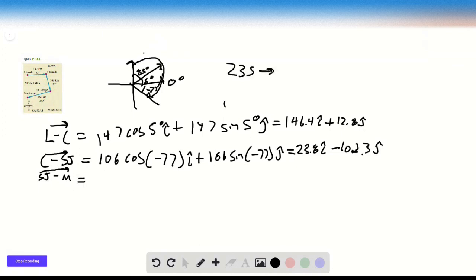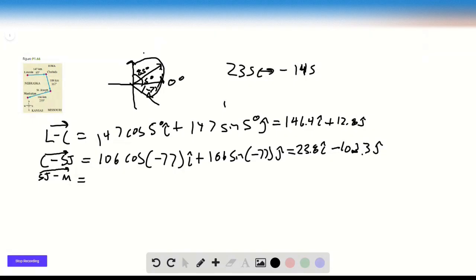So 235 is the same thing as negative 145 in real coordinates. So going from starting at east at 0 and where counterclockwise is the way that angles are positive. So we're going counterclockwise, 145 degrees from 0. So we can write this as 166 times the cosine of negative 145 i-hat plus 166 times the sine of negative 145 j-hat, which just equals negative 135.98 i-hat minus 95.2 j-hat.